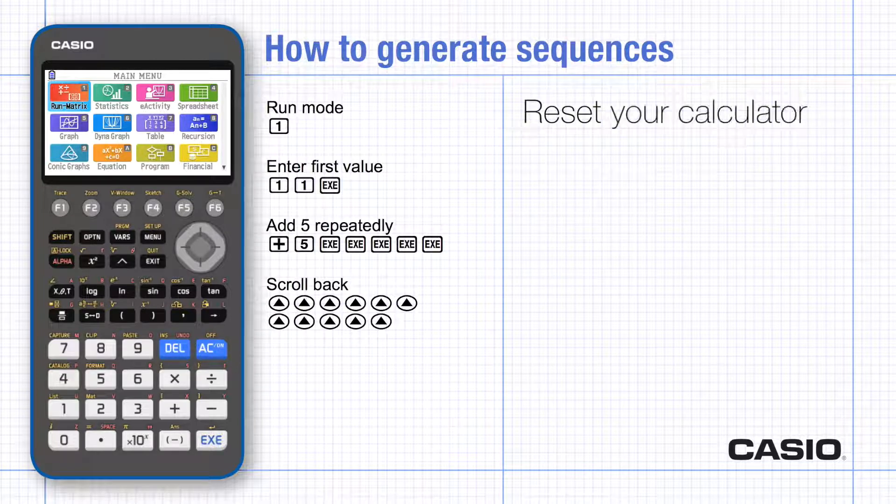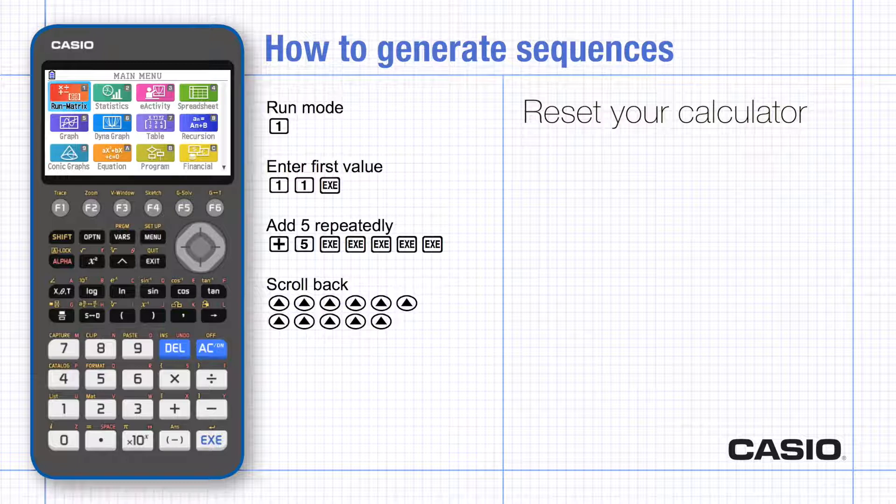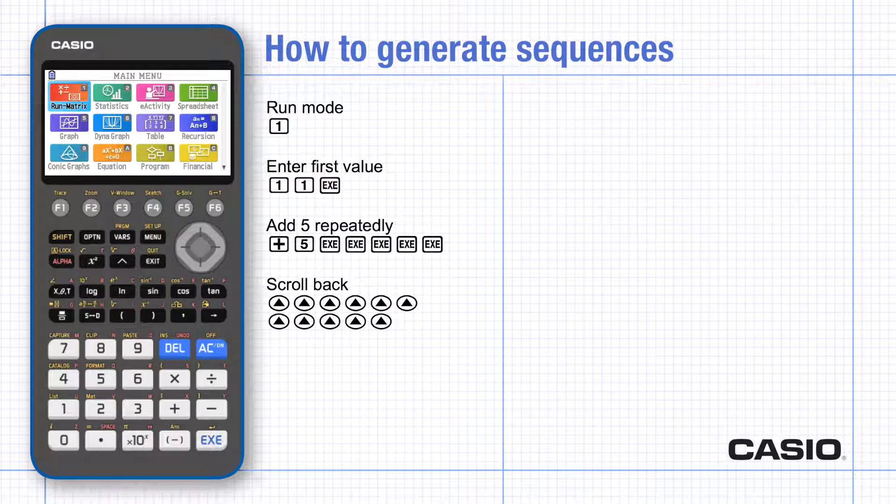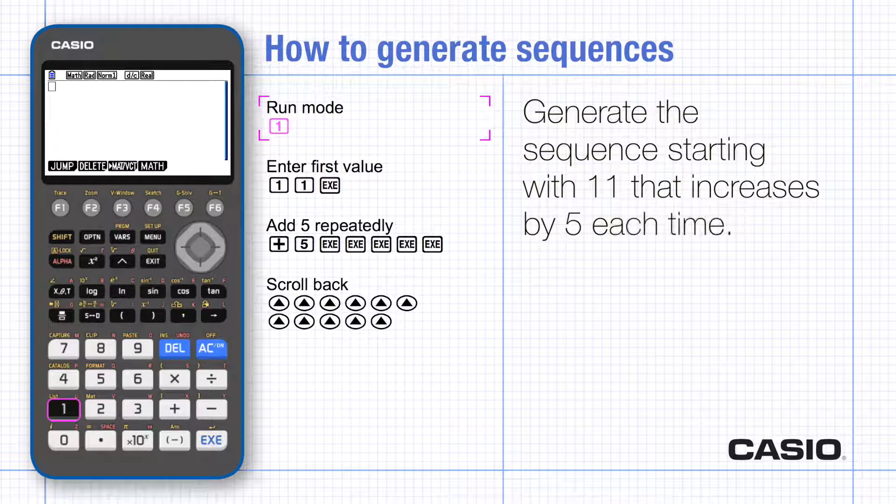To work along with this tutorial, you may find it easiest to reset the calculator before starting so that your screen matches the one in the video. Choose run mode, type 11, and enter.